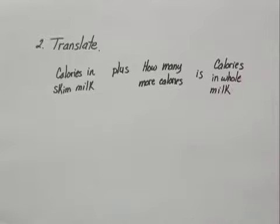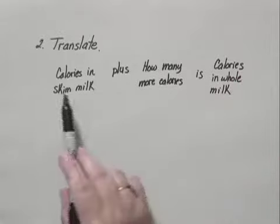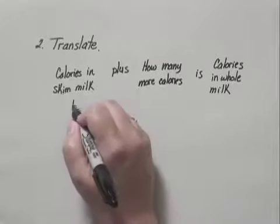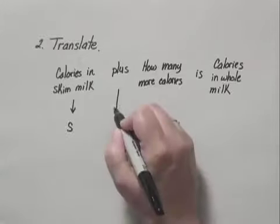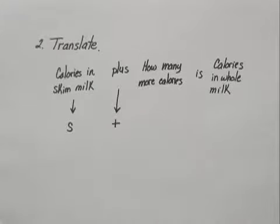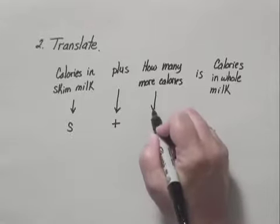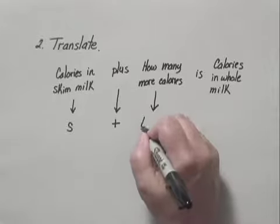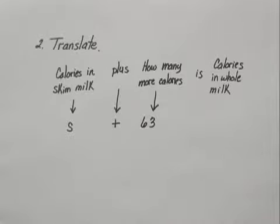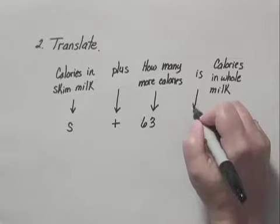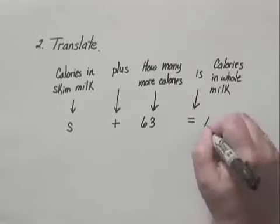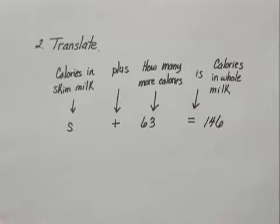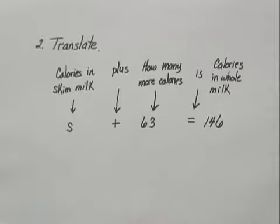I've just rewritten this as an English sentence, but now I can translate. The calories in skim milk is S — we don't know how many that is, so we called it S. Plus translates to the plus sign. How many more calories? The problem tells us that there are 63 more calories in a serving of whole milk than in skim milk. "Is" translates to equals. And we're told that the number of calories in a serving of whole milk is 146. This gives us an equation we can solve: S plus 63 equals 146.